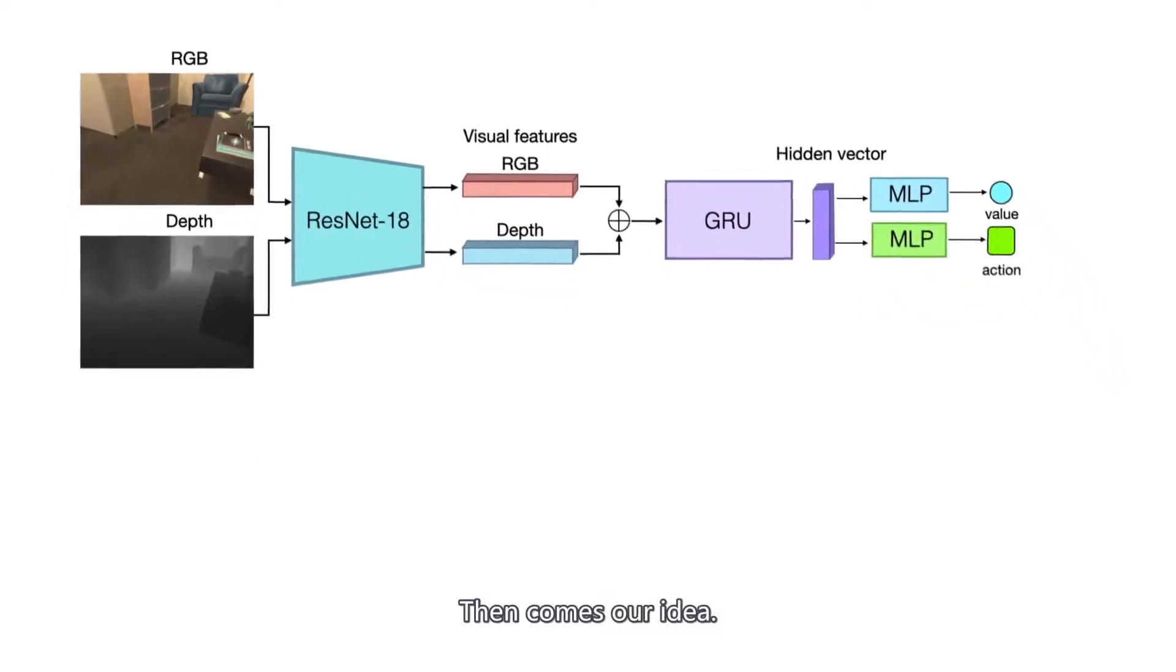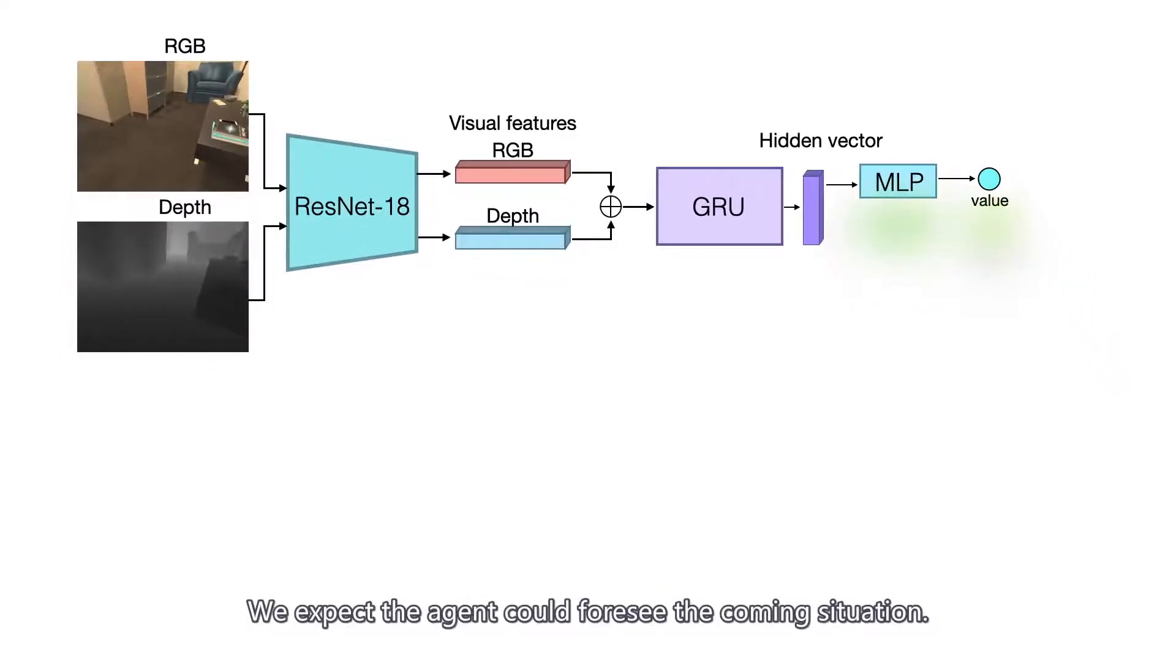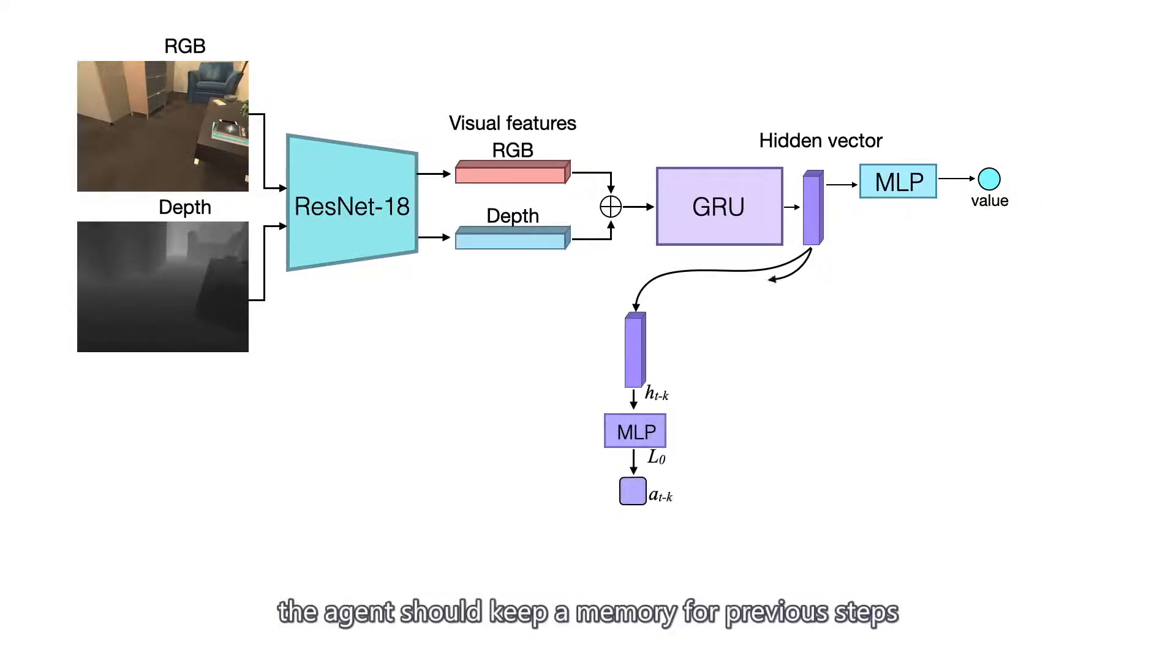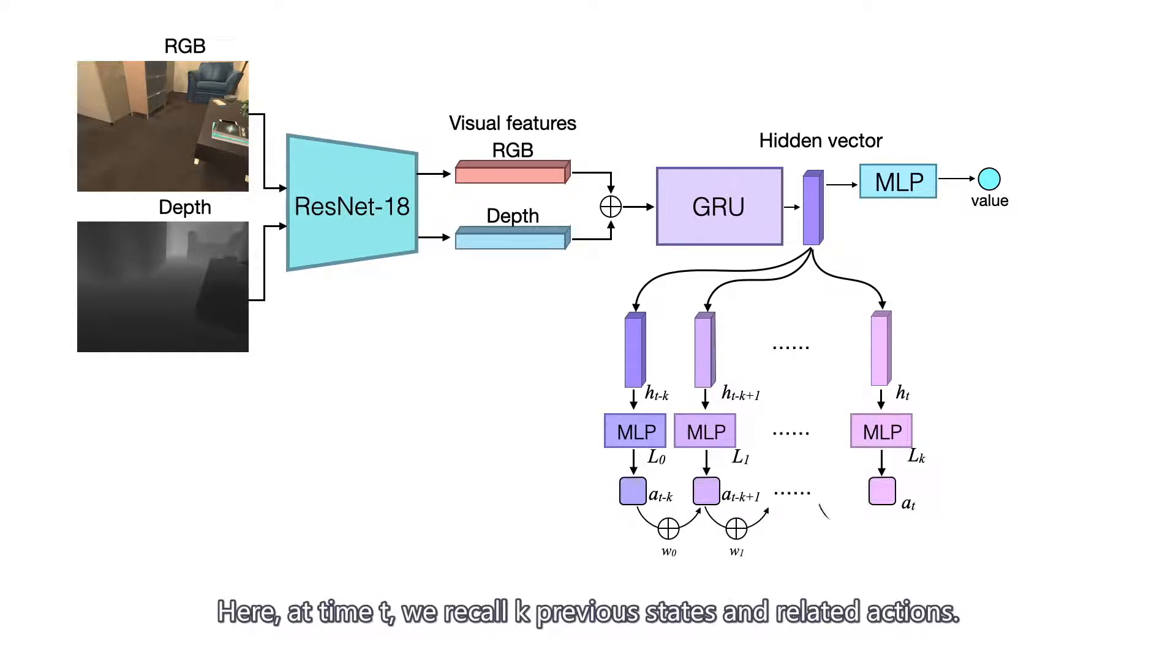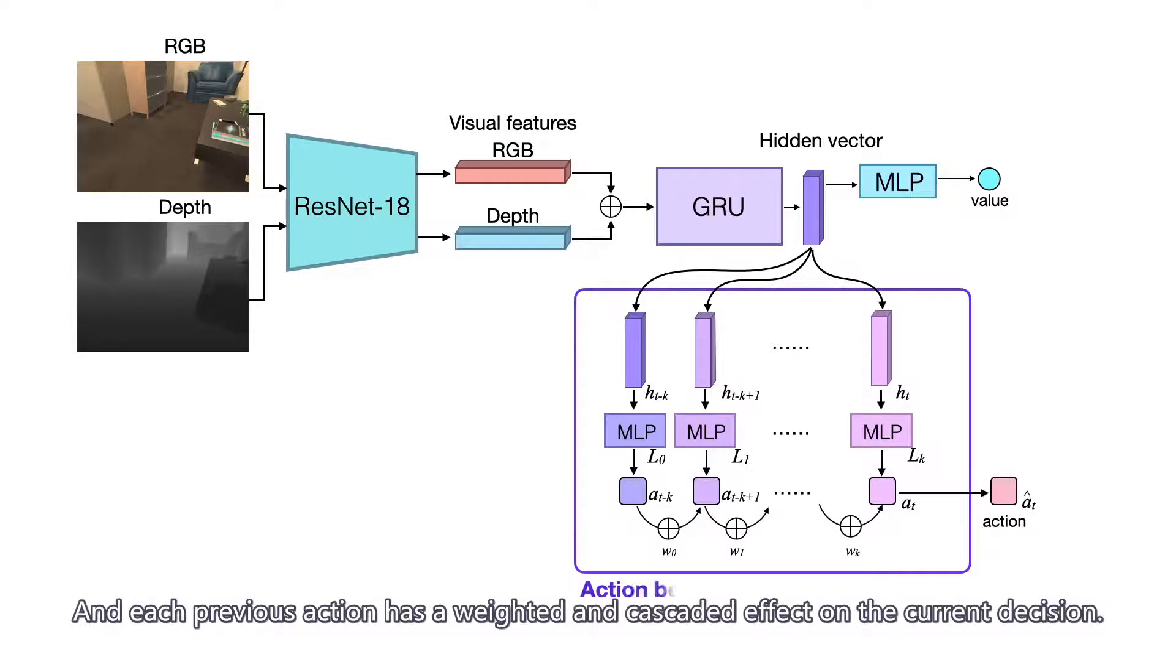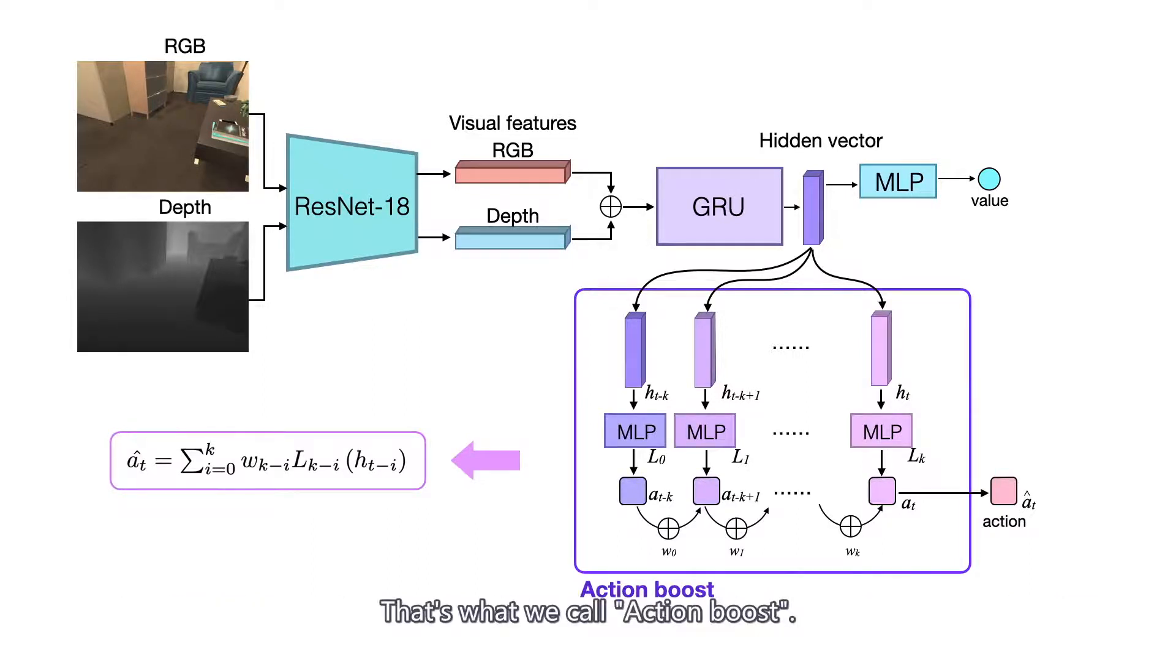Then comes our idea. We expect the agent could foresee the coming situation. Therefore, for each time step, the agent should keep a memory for previous steps and then predict the most suitable action. Here, at time t, we recall key previous steps and related actions. And each previous action has a weighted and cascaded effect on the current decision. That's what we call Action Boost.